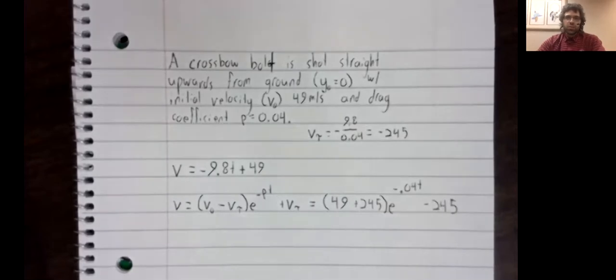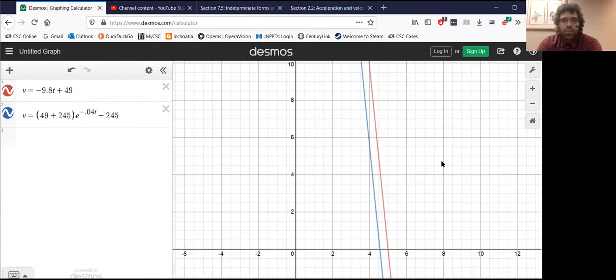And let's go to Desmos.com. Well, these graphs aren't the most fascinating perhaps, but we see what we expect to see. Air resistance opposes movement. So this blue graph, the graph with air resistance, is witnessing lower velocities than the graph without air resistance.